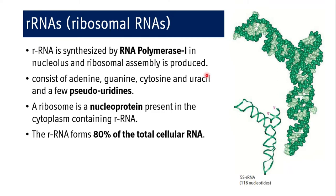But if you remember from the previous session on the structure of mRNA, we discussed that along with these four nucleotides — adenine, guanine, cytosine, and uracil — messenger RNA also contains methylpurines and methylpyrimidines. Here, ribosomal RNA, along with these four nucleotides, also has a few pseudouridines present in its structure. So there can be an MCQ on this.